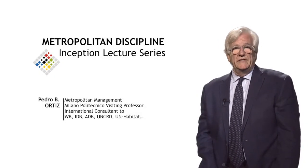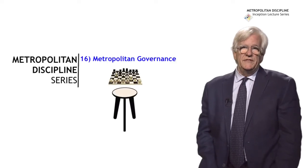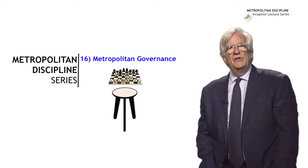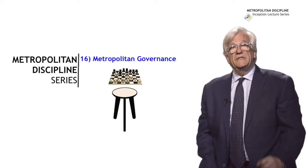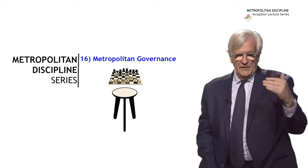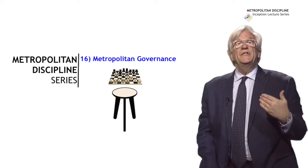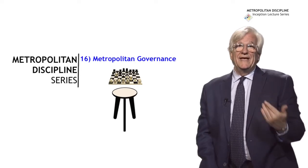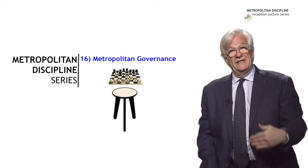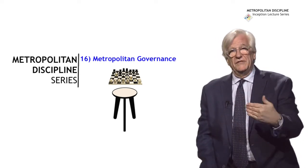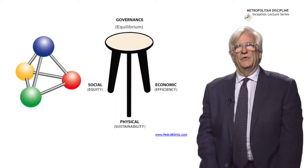Today in this series of lectures and presentations on the new metropolitan discipline, we are going to have a look at metropolitan governance. As we have mentioned in some of the previous ones, managing a metropolis is like playing chess on a three-legged stool. The governance is the strategic component, and playing chess is the structural governance. We are going to have a look at both of them.